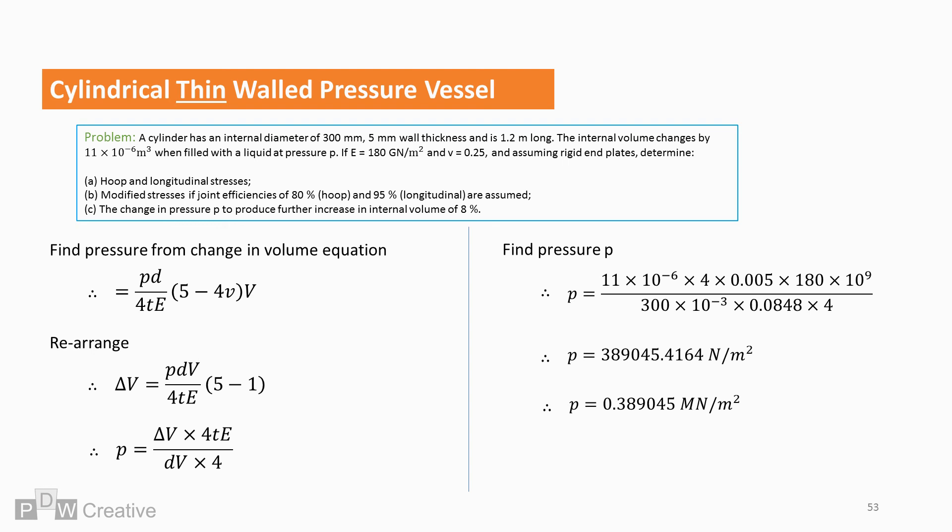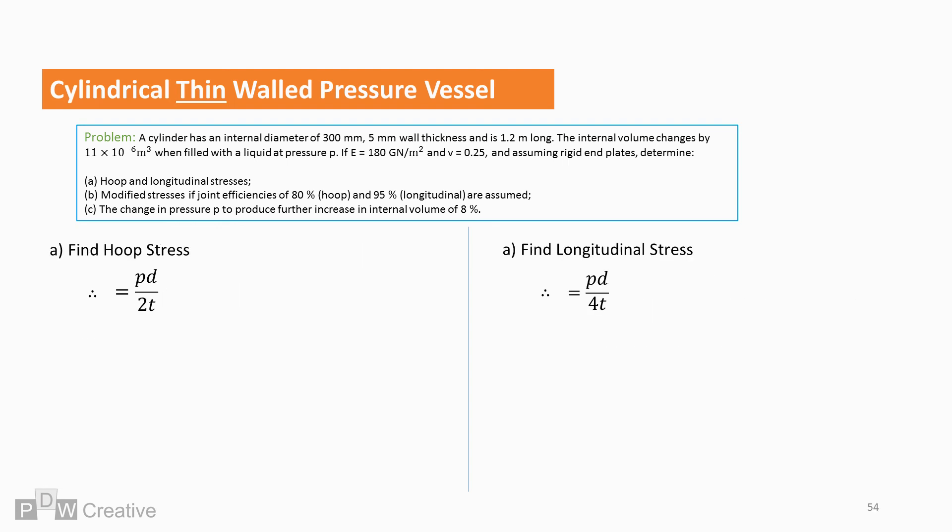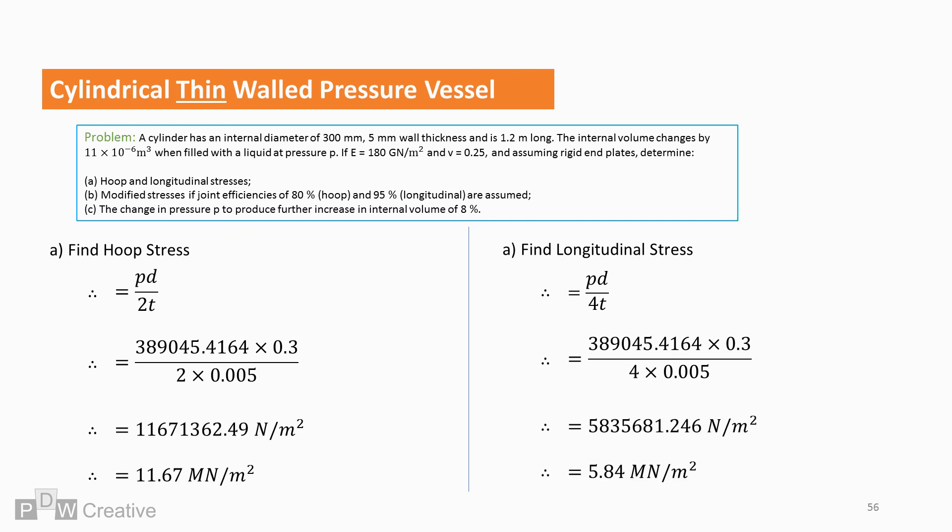And by knowing this, we can now find the stresses required for part A. So hoop and longitudinal stresses are P times D over 2 or 4 times T, depending on the stress. Let's lay out the figures. And this gives us a stress of 11.67 meganeutons per square metre for hoop. It also gives a stress of 5.84 meganeutons per metre squared for axial. We could write this in terms of Pascals.